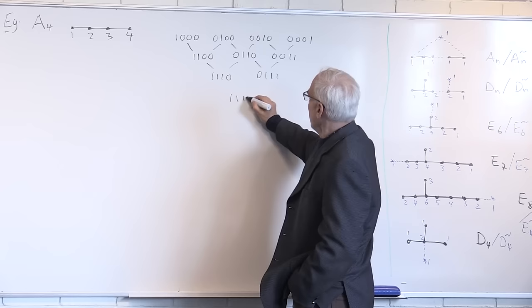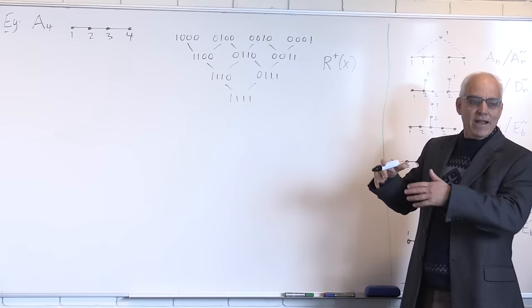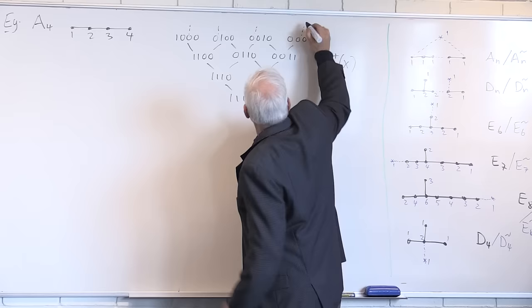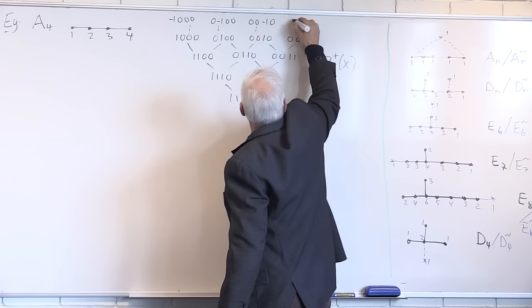There's a corresponding other half — the negative roots — obtained by similar mutations. Reflection or mutation gives us (-1,0,0,0), (0,-1,0,0), (0,0,-1,0), (0,0,0,-1), and then a corresponding mirror image set. So the full root system has both positive and negative roots.